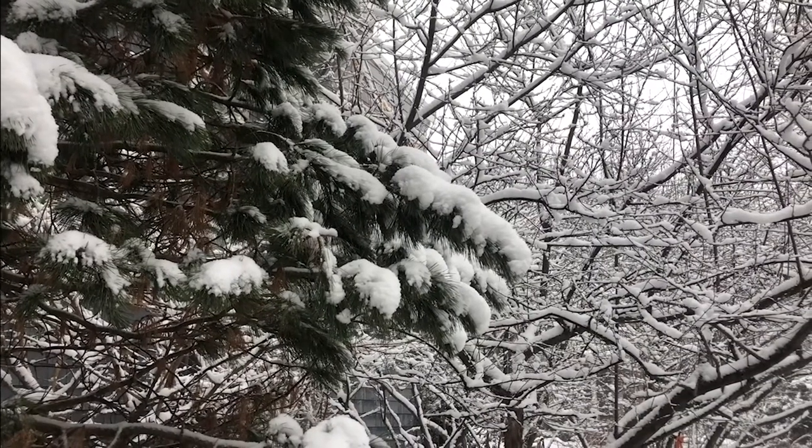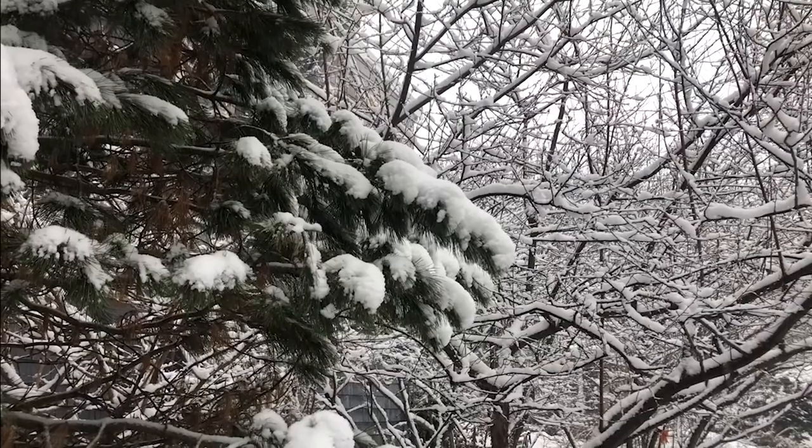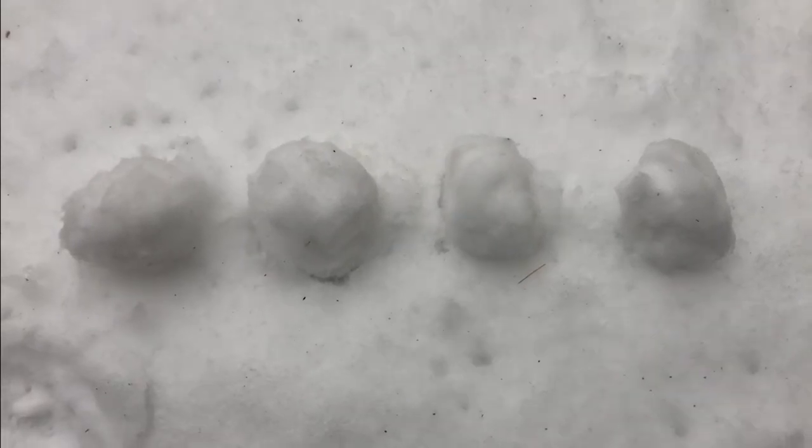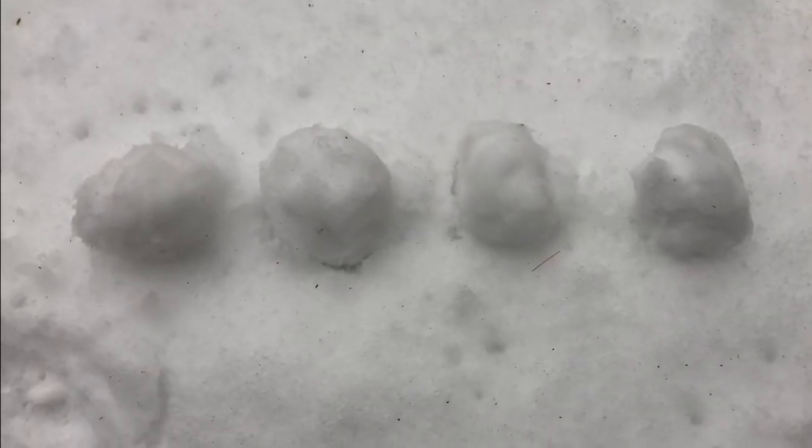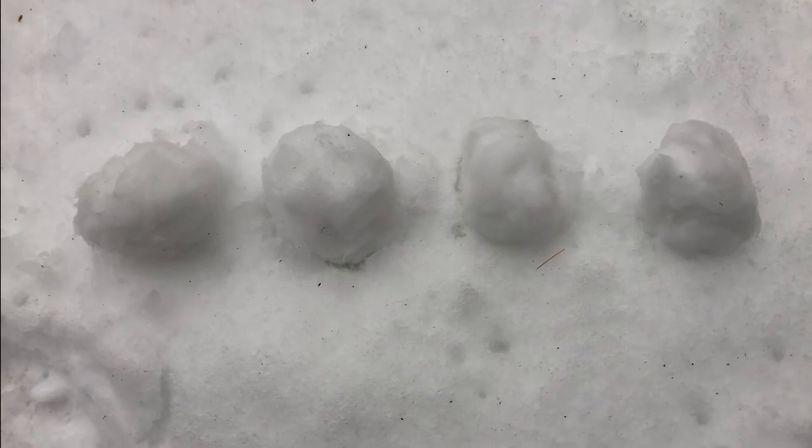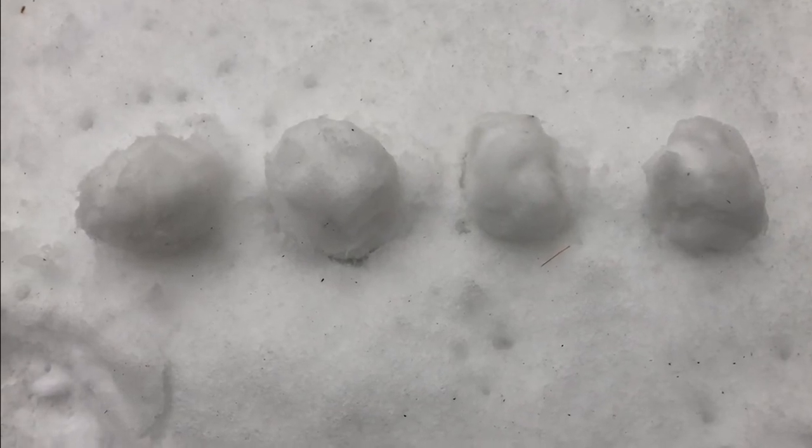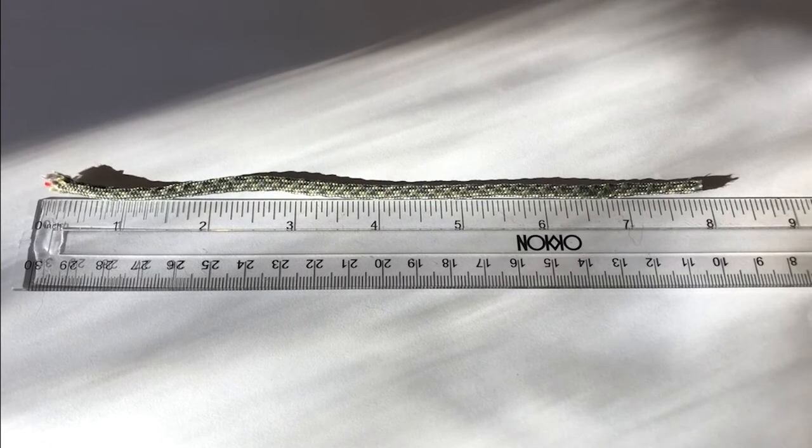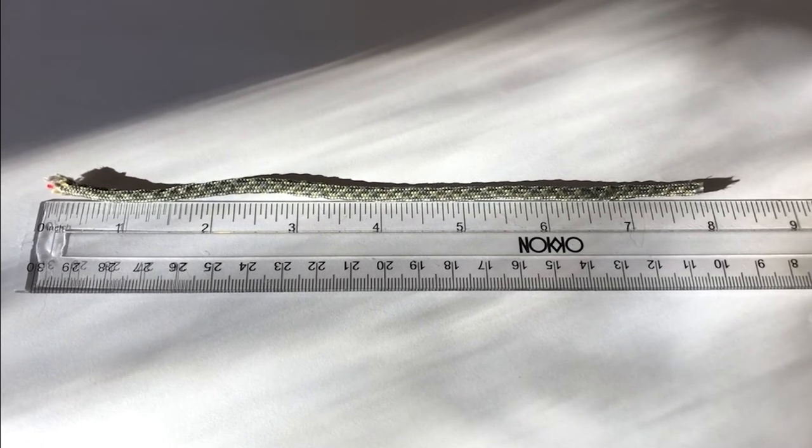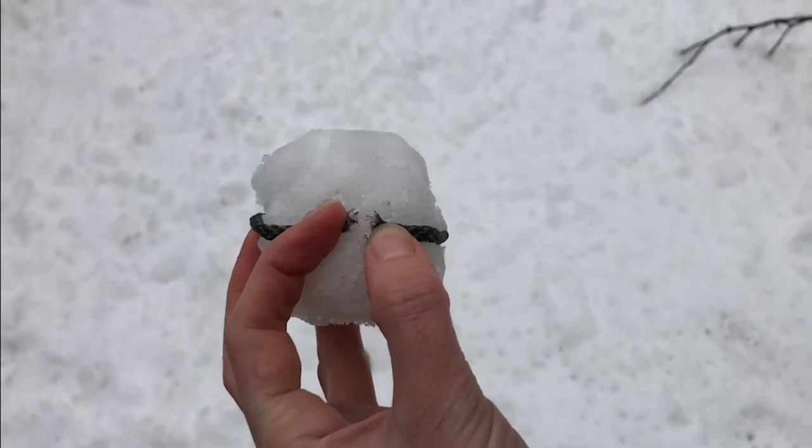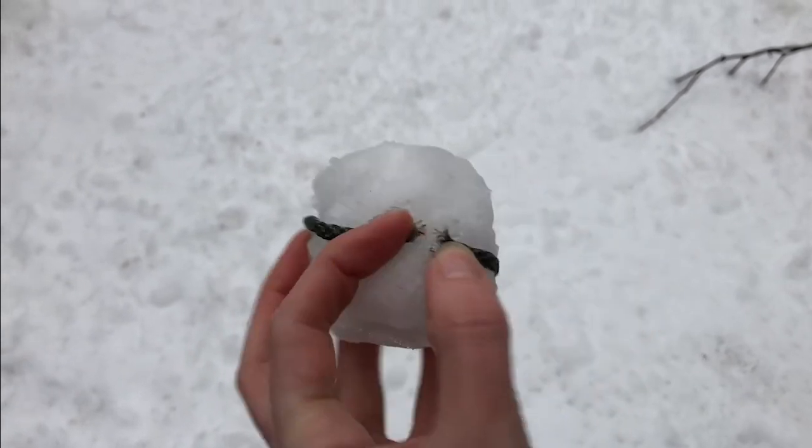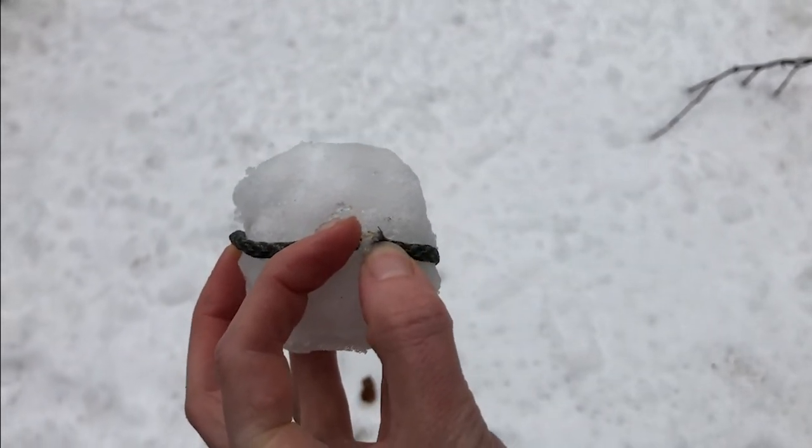Next we need to make some snowballs. So find some snow and try to make several snowballs that are all similar in size. We are going to check that they are the same size by using a piece of string. I've measured mine to be eight inches. Now I wrap the string around the circumference of the snowball. Do this with each one to make sure that they're about equal in size.